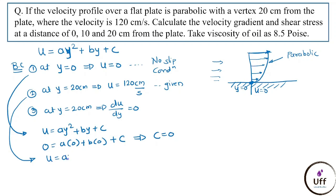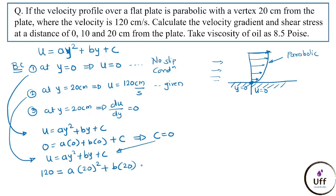Applying the second boundary condition (y = 20, u = 120) into u = ay² + by: 120 = a(20²) + b(20) = 400a + 20b. This is Equation 1.